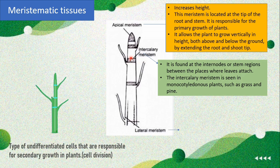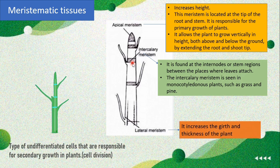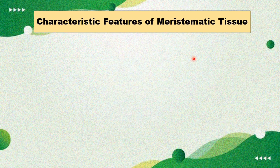Intercalary meristem increases the length between the internodal regions. Next, lateral meristem increases the girth and thickness of the plant. To summarize: meristematic tissues are classified into apical meristem, which is responsible for the growth of plants; intercalary meristem, found in the internodal regions; and lateral meristem, which increases the girth or thickness of the plant.